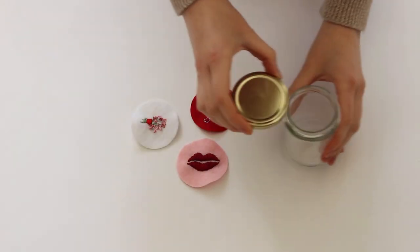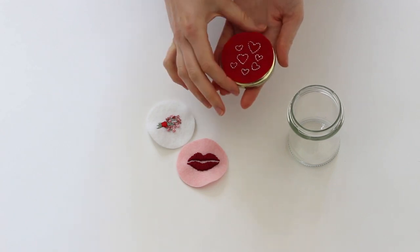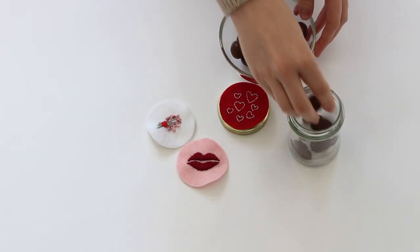Now take your jar lid and with hot glue gun or any other glue, attach the embroidered felt circle to the top of the lid.